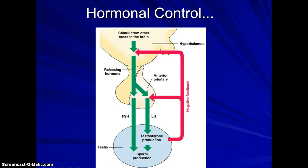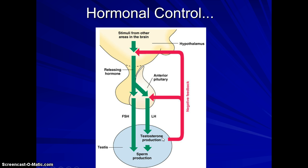Testosterone then does several things: secondary sex characteristics like facial hair, deeper voice, more muscle mass, and so on. It also allows for sperm production once testosterone secretion begins at puberty. FSH also plays a role in sperm production — it allows for mature sperm to develop. So both hormones are needed for sperm production to occur, and testosterone additionally drives secondary sex characteristics.